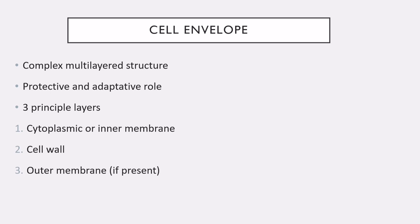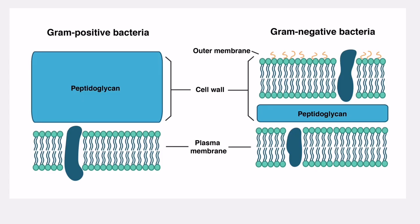The cell envelope is a complex multi-layered structure that provides a protective and adaptive role. It has three basic principal layers: the inner membrane, cell wall, and outer membrane — the outer membrane is only present in gram negative bacteria — and there is also a capsule or slime layer. Gram positive bacteria have a thick peptidoglycan layer and no outer membrane, whereas gram negative bacteria have an outer membrane, thinner peptidoglycan, and then the plasma membrane. The space between the outer and inner membrane is known as periplasm.